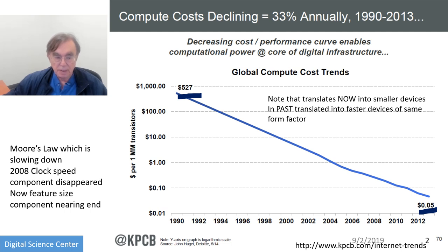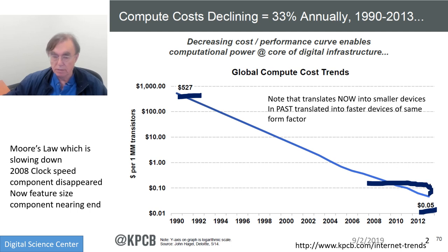Around 2008, the clock speed leveled off. Now the feature size improvement, which is still giving us some improvement, is also leveling off. Still, it has another 10 years or so probably to go when you'll still see real compute cost improvements.